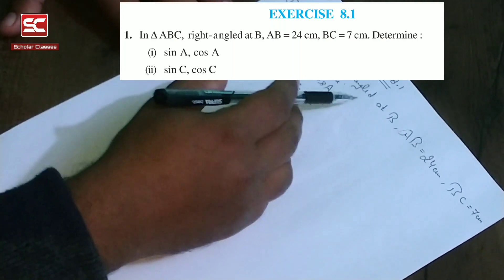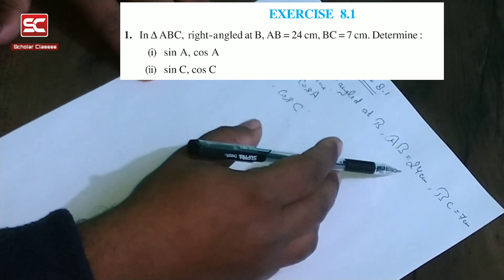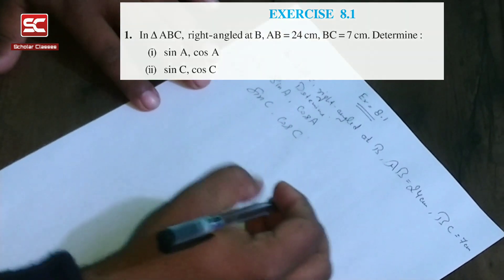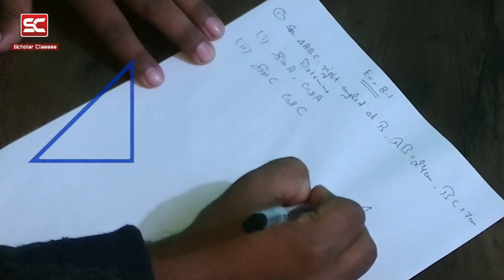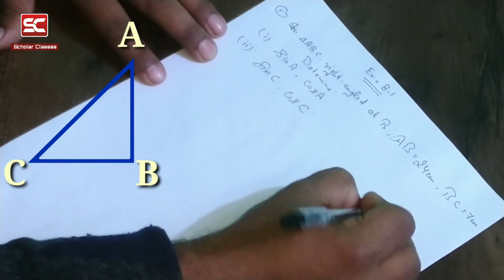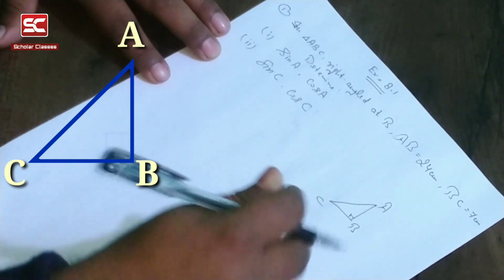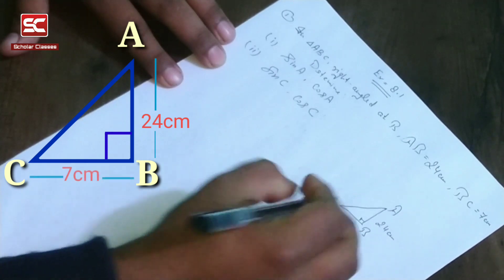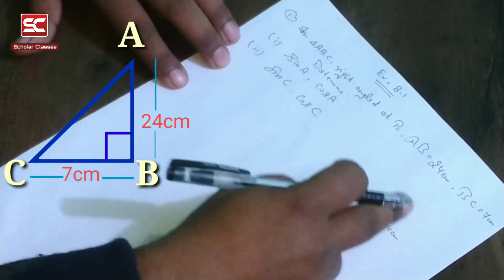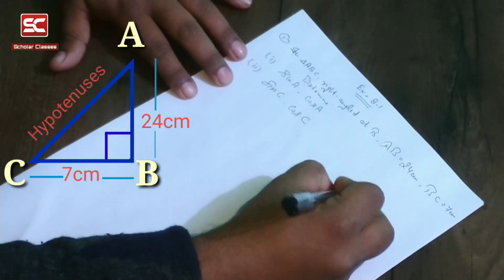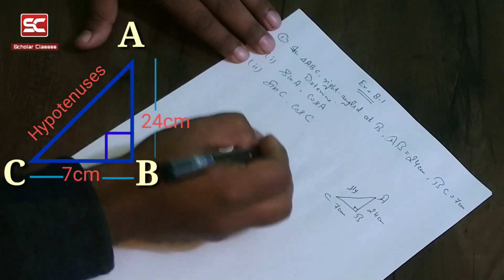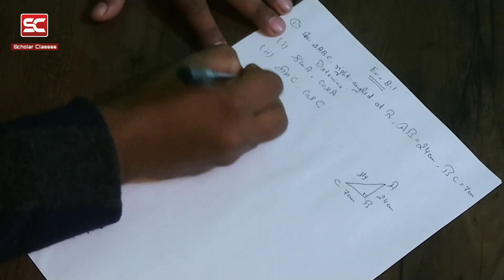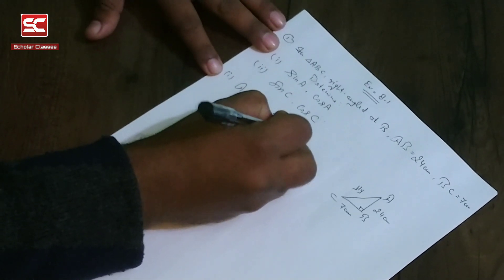In triangle ABC, right angle at B, AB is equal to 24 centimeters, BC is equal to 7 centimeters. Determine sine A and cos A in the first part. First, we make triangle ABC with a right angle at B, AB equal to 24 centimeters, BC equal to 7 centimeters. Then we find the value of AC. AC is the hypotenuse, and we find its value using the Pythagorean theorem.